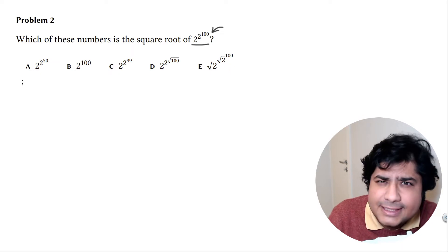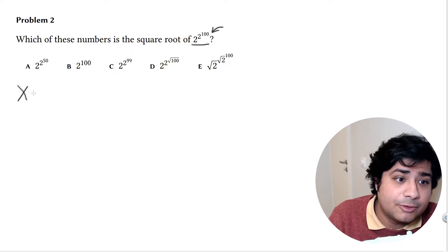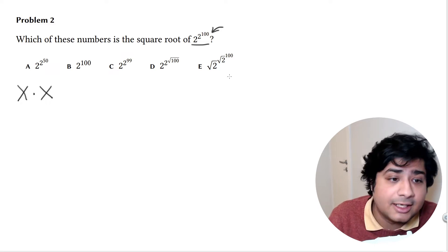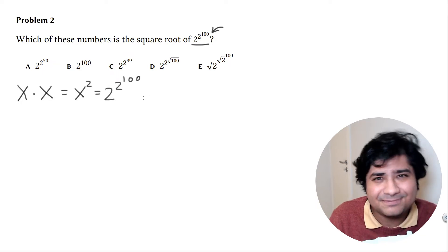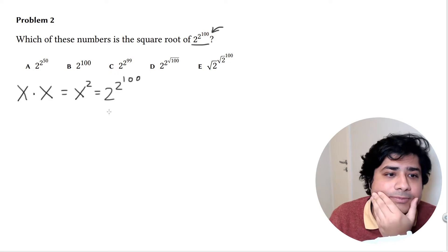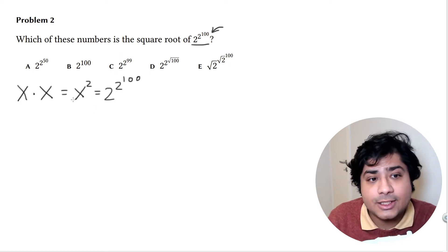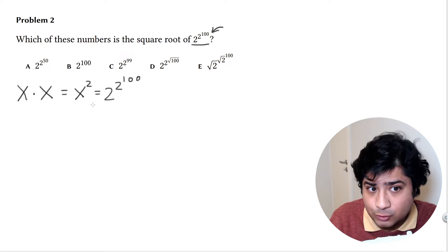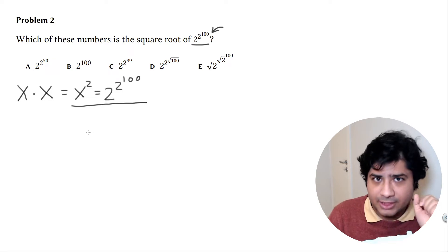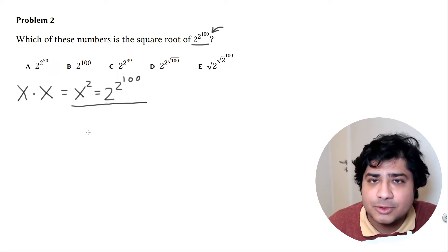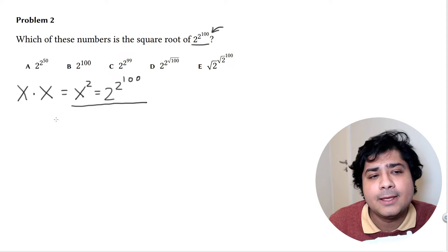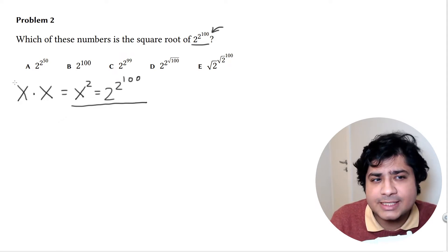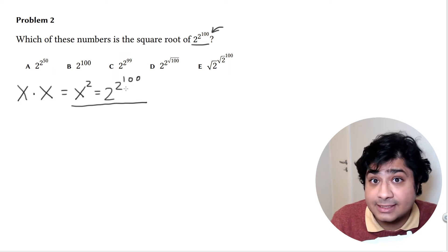With square root, that means there is some number — let's call it x — that if you multiply it by itself gives us 2 to the power of 2 to the power of 100. In other words, x squared equals 2 to the power of 2 to the power of 100, and x needs to be one of the given options. So let's try that approach first.